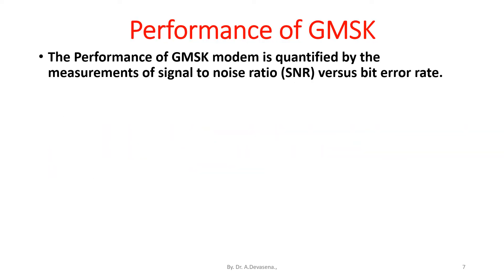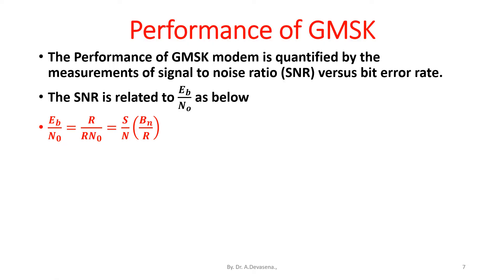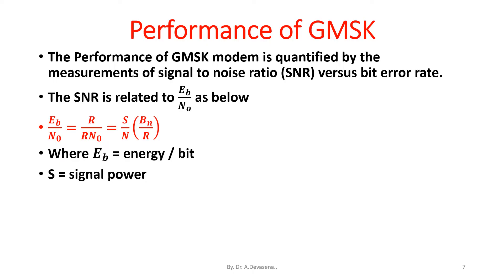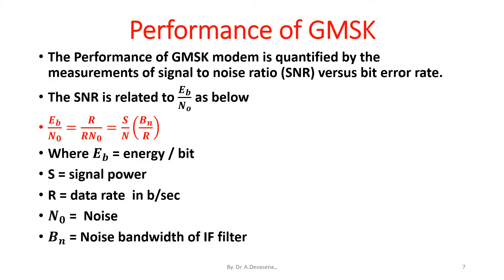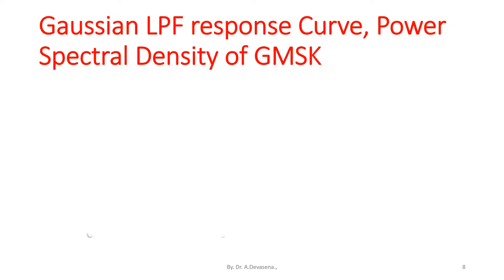In practice, GMSK is most attractive for its excellent power efficiency due to constant envelope and its excellent spectral efficiency. The performance of a GMSK modem is quantified by measurements of Signal-to-Noise Ratio (SNR) versus Bit Error Rate. The SNR is related to Eb/N0, where Eb/N0 equals S divided by (R × N0), with Bn divided by R, where Eb is energy per bit, S is signal power, R is data rate in bits per second, N0 is noise, and Bn is noise bandwidth.